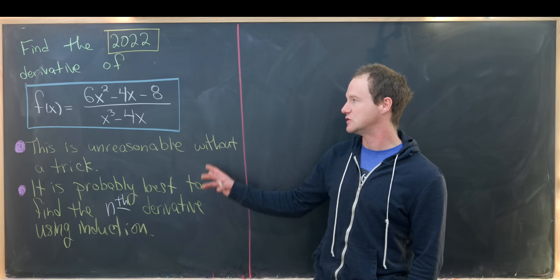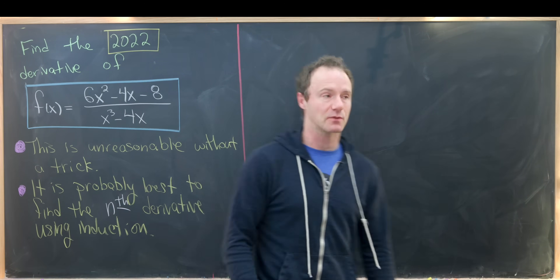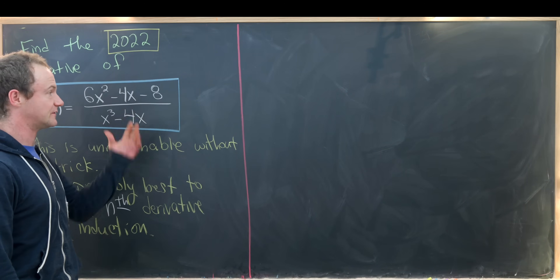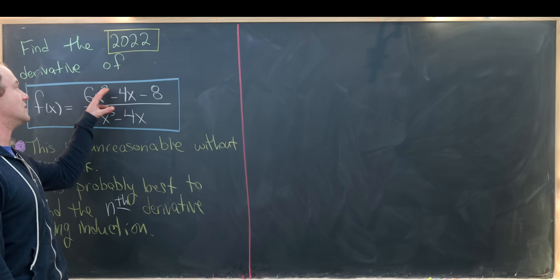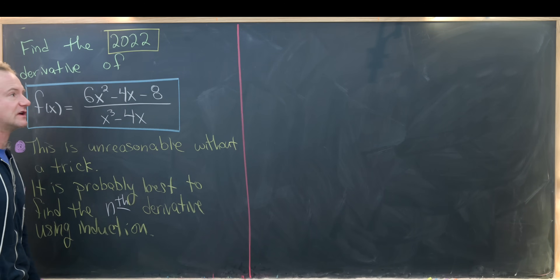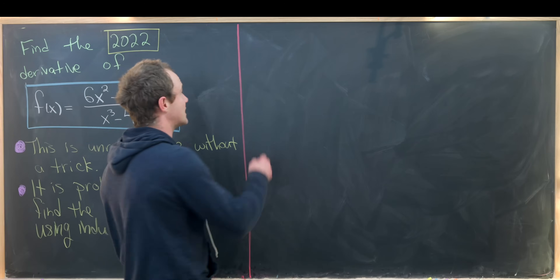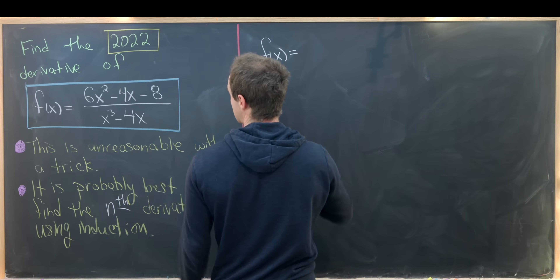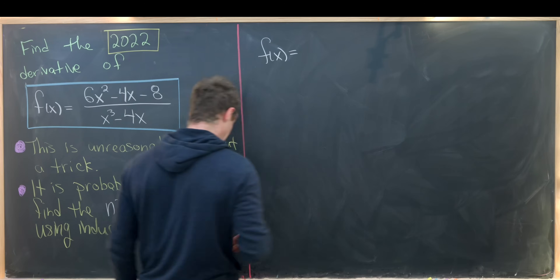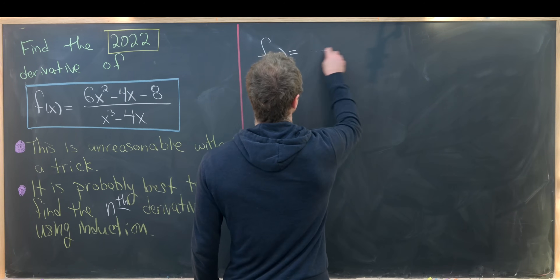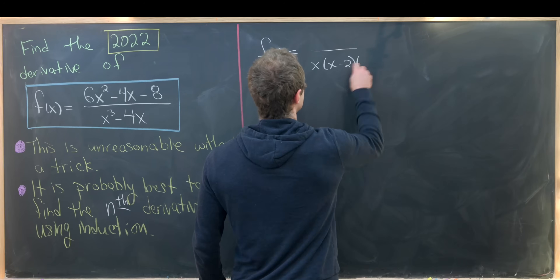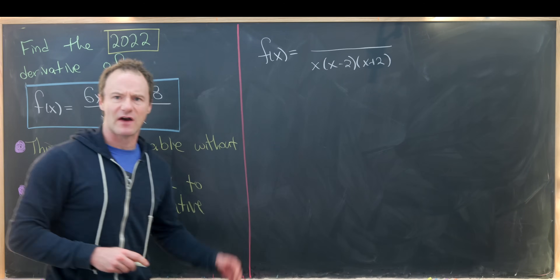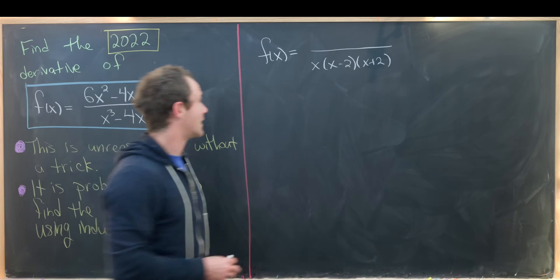Keeping these two things in mind, let's dive in. This is a rational function where the degree of the numerator is smaller than the degree of the denominator, so we can rewrite it using partial fraction decomposition. The denominator factors as x times (x minus 2) times (x plus 2), and that's going to drive our partial fraction decomposition.